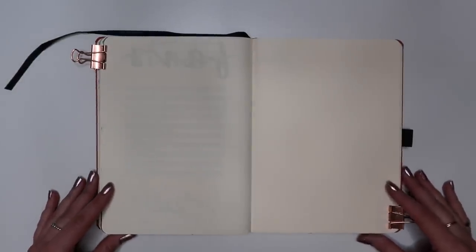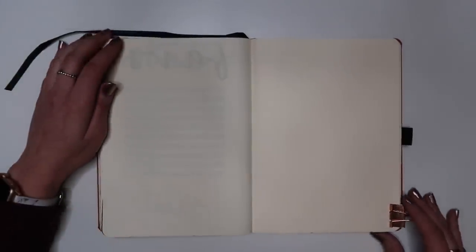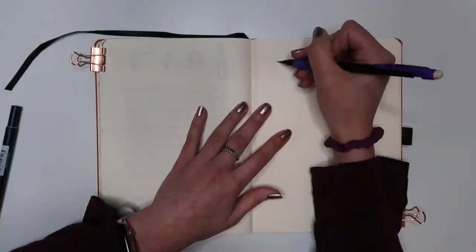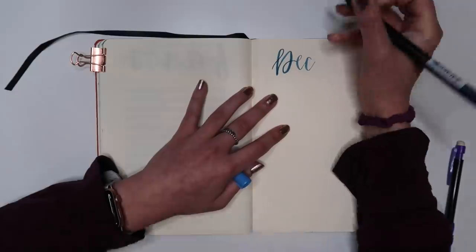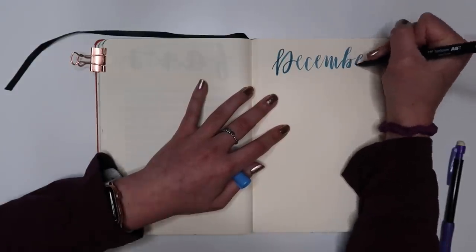Hey everyone! Welcome to another Plan With Me reading bullet journal spread. So this is for the month of December and for this month I ended up deciding to go with kind of a Frozen theme.